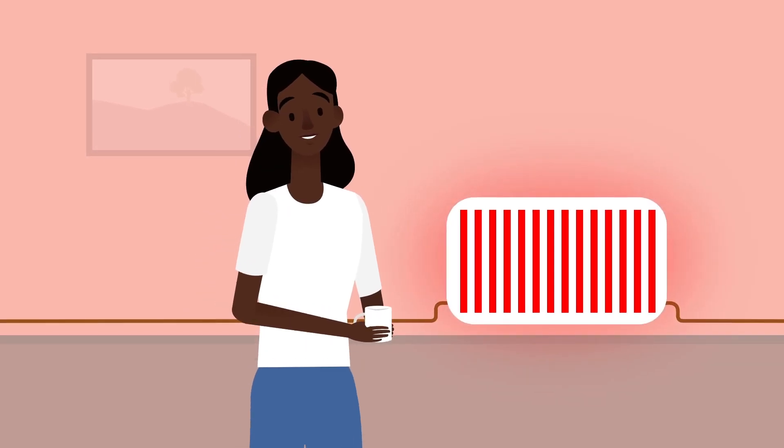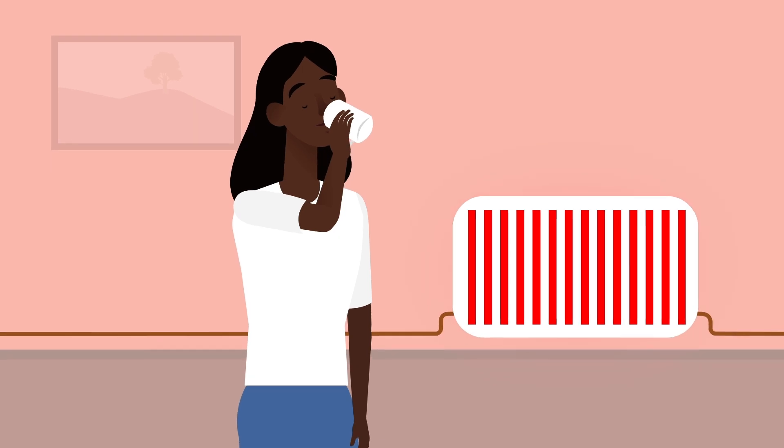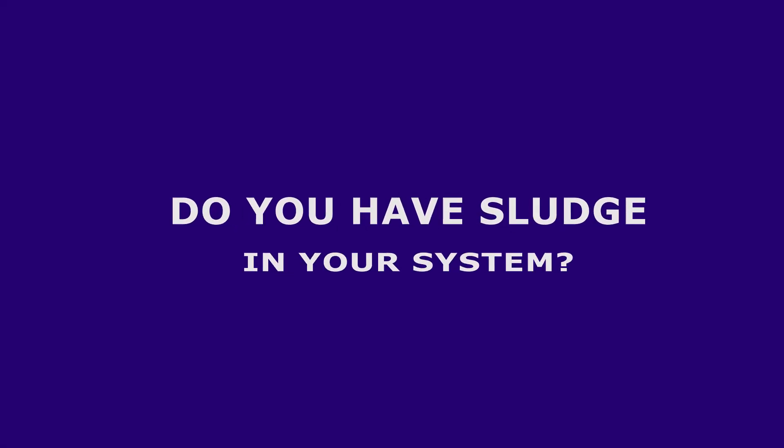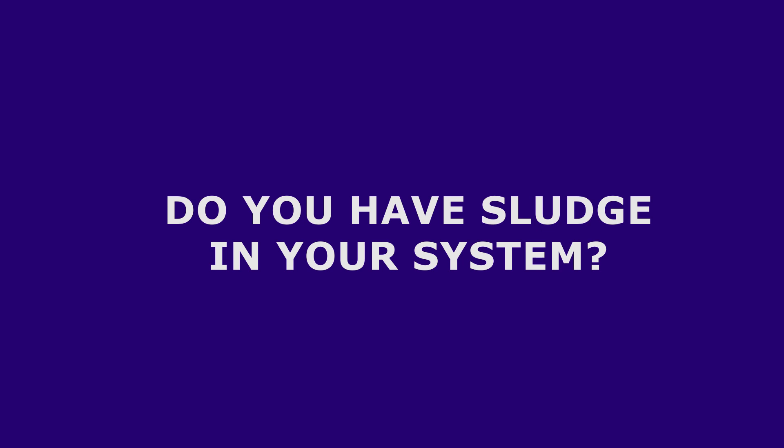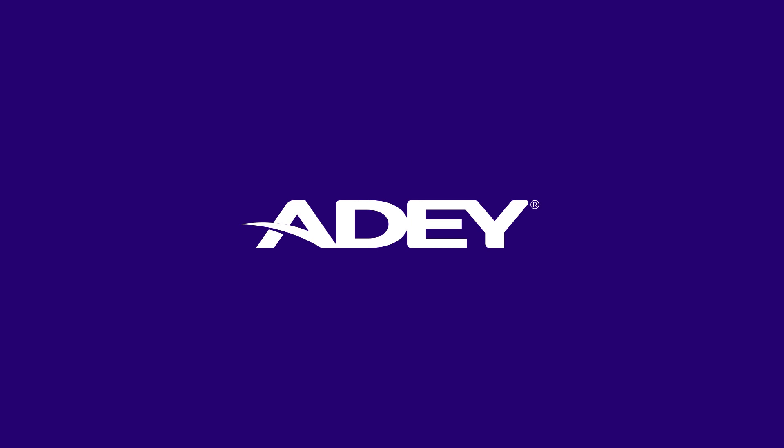Contact your local heating engineer and ask about a MagnaClean Rapid Flush. Do you have sludge in your system? Ask your local heating engineer to carry out a quick and easy water test using AD ProCheck.